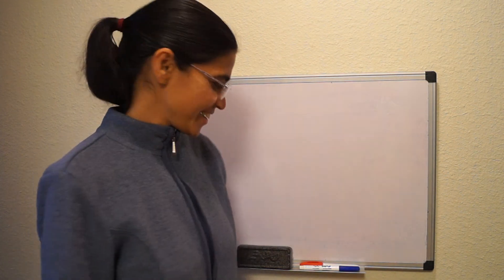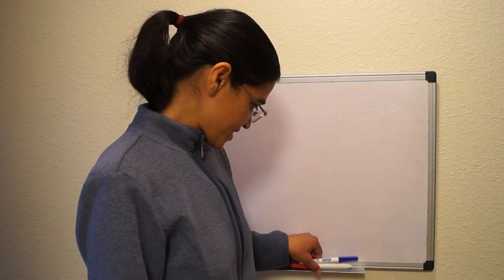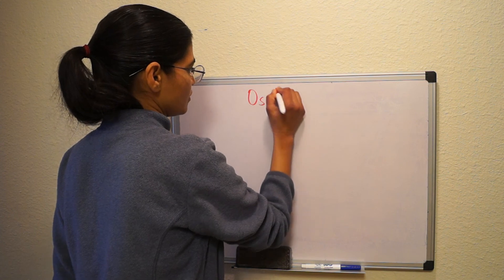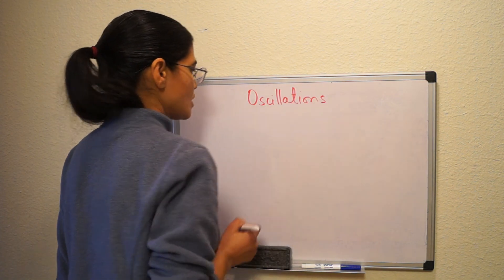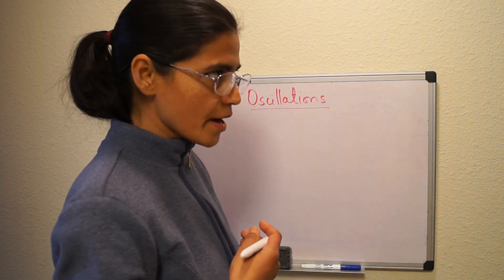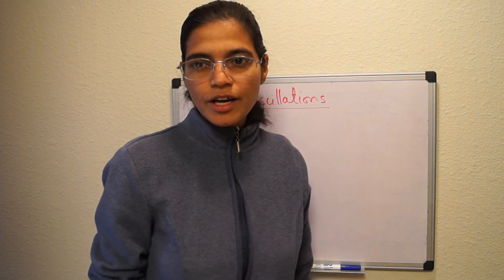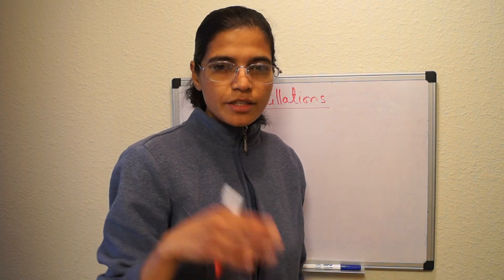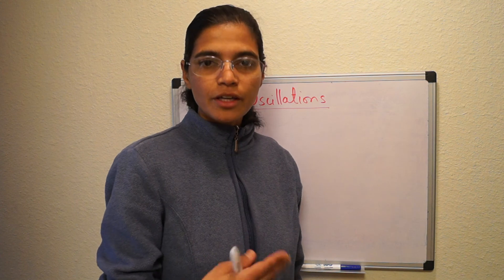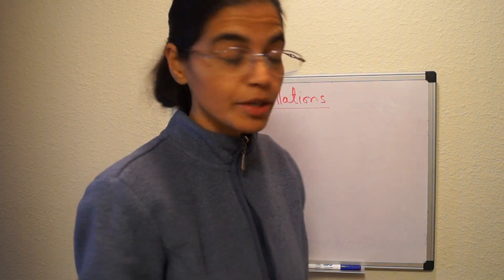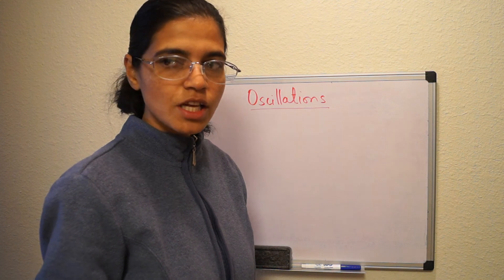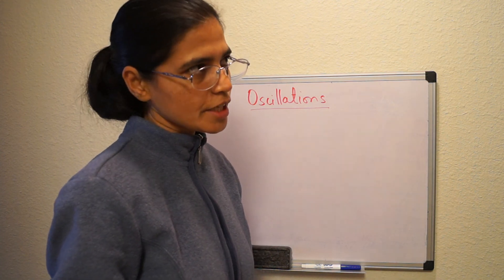Welcome back everybody. We're in the chapter on oscillations. Last class we learned about simple harmonic motion and periodic motion — we defined that if the motion repeats itself after a certain interval of time, it's periodic motion. We looked at several examples of simple harmonic motion, like a mass-spring system and a simple pendulum.